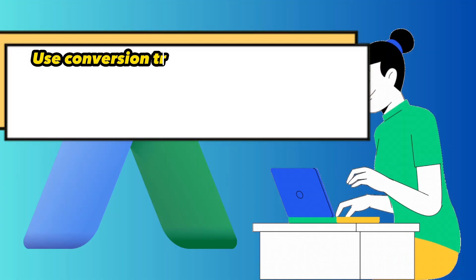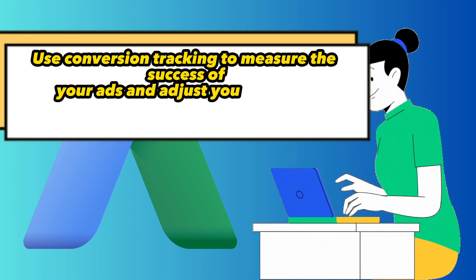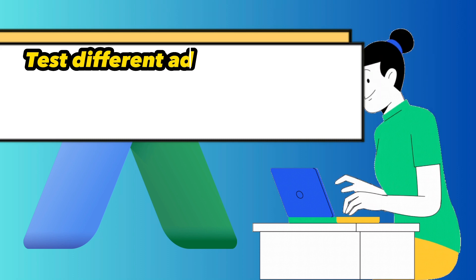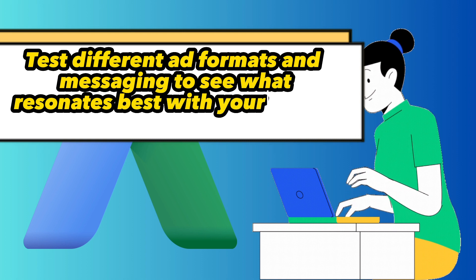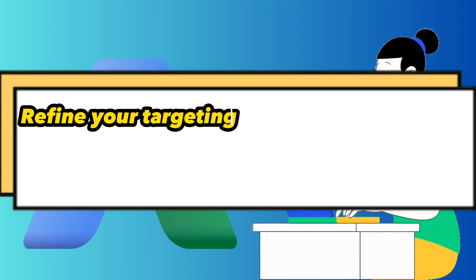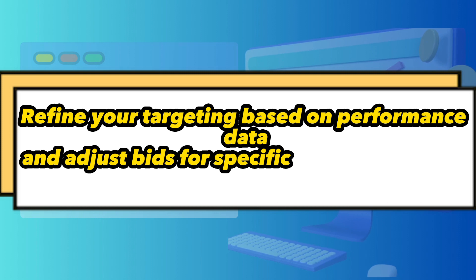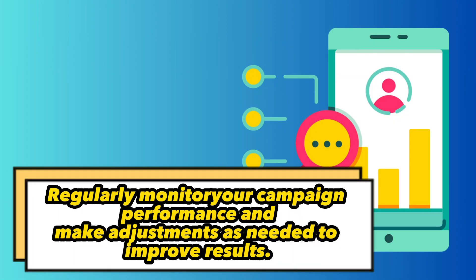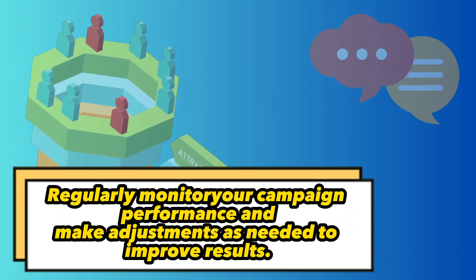Use conversion tracking to measure the success of your ads and adjust your bidding accordingly. Test different ad formats and messaging to see what resonates best with your target audience. Refine your targeting based on performance data and adjust bids for specific demographics or locations. Regularly monitor your campaign performance and make adjustments as needed to improve results.